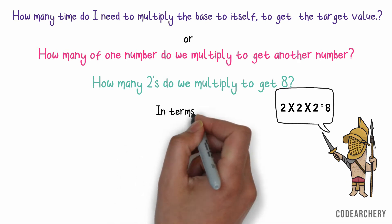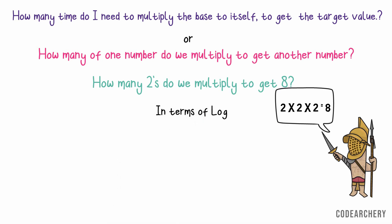Now, how to write this in terms of logarithms? It's simple. It's log 8 to the base 2 equals 3. It's also equivalent to 2 to the power 3 equals 8.